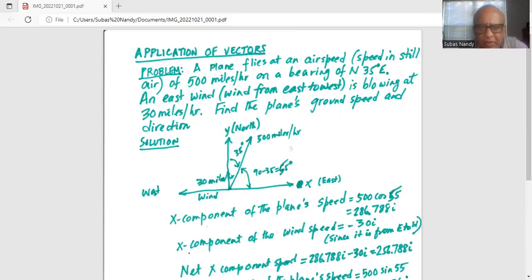X component of the plane's speed is 500 cosine of 55. Why 55? Because the plane flies at a bearing of north 35 degrees east. That is, its angle from the y-axis, which represents north direction, is 35 degrees.